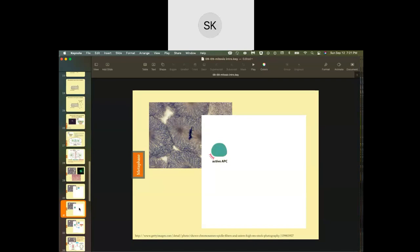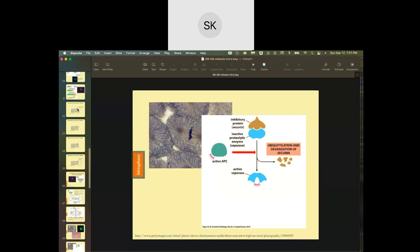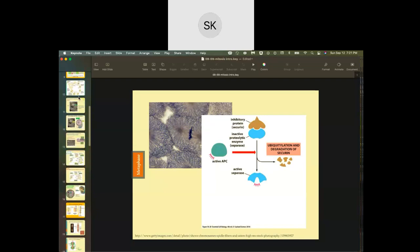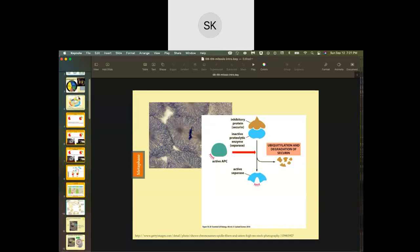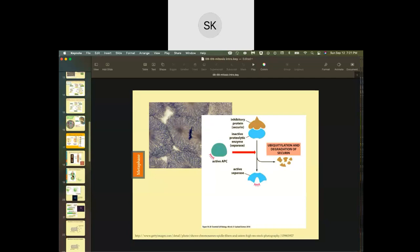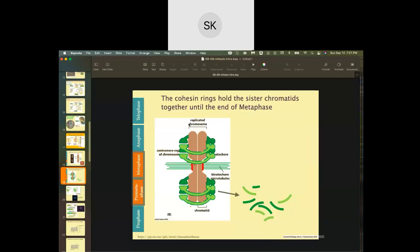When it's active, the separase is actually going to separate the chromatids by actually getting rid of those cohesin rings. So the image that we saw before, these green guys, we see they're degraded here. This is due to the action of separase.